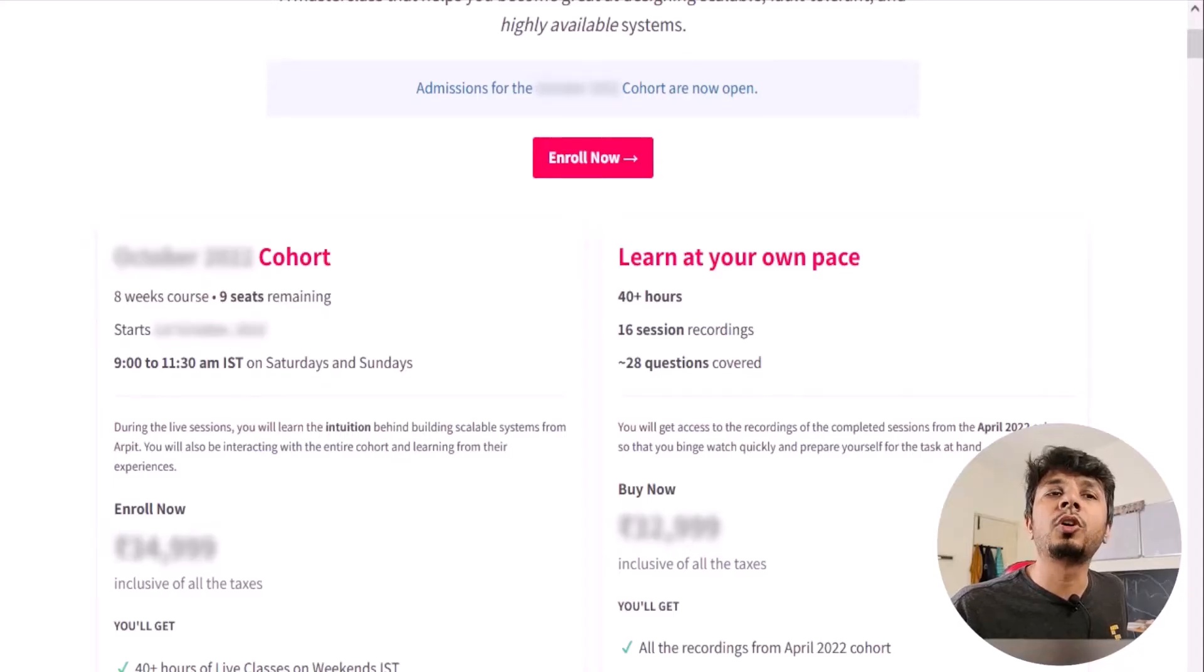The live cohort based course happens once every two months and will go on for eight weeks while the recorded course contains the recordings from one of the past cohorts as is. If you are in a hurry and want to binge learn system design I would recommend going for the recorded one. Otherwise the live cohort is where you can participate and discuss the systems and its design live with me and the entire cohort. The course details, prerequisites, testimonials can be found on the course page arpitbhayani.me/masterclass. I have also put the link of this course page in the description down below and I am looking forward to see you in my next cohort.